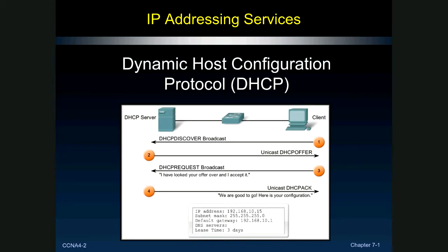Let's start with Dynamic Host Configuration Protocol. When I first started working with networking, there was no DHCP. We statically configured everything. When someone moved to a different floor of the building, I had to manually change their IP address on their desktop PC, and I maintained Excel spreadsheets with valid IP addresses — crossing them out and adding them back. It was a big hassle. So when DHCP came out in about the mid-90s, all of us network administrators eagerly adopted it.